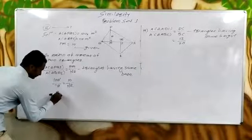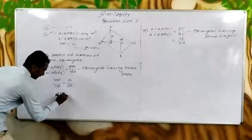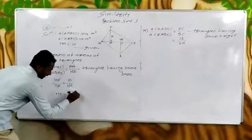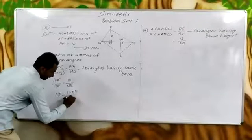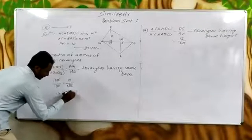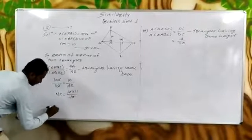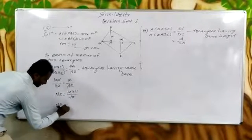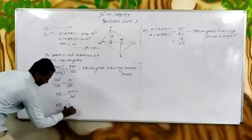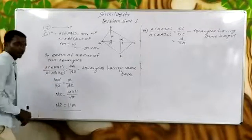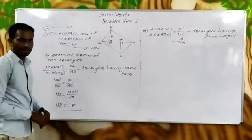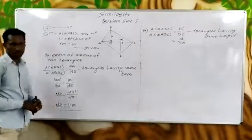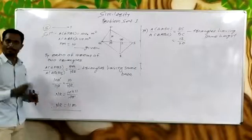nr equals 10 into 11 by 10. The 10s cancel, so nr is equal to 11 meters. So nr equals 11 meters. This is your question number 5.